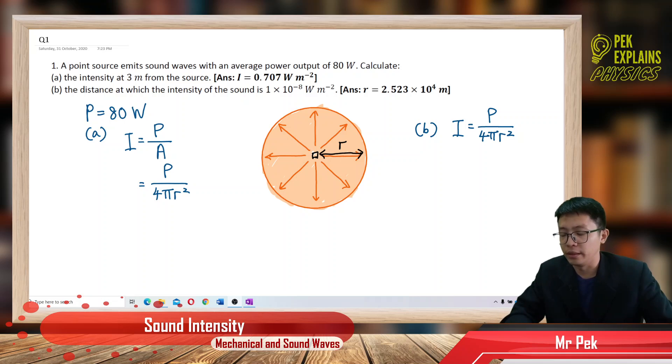Sound intensity. This is the question: A point source emits sound waves with an average power output of 80 W. Calculate the intensity at 3 meters from the source.